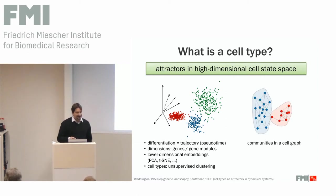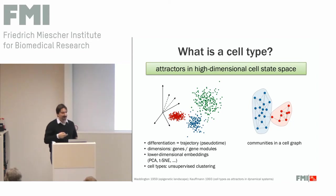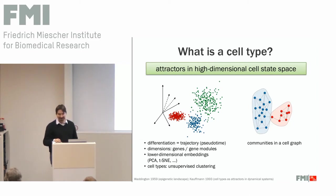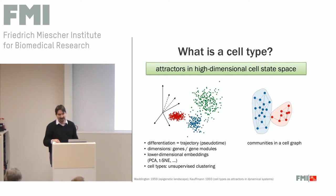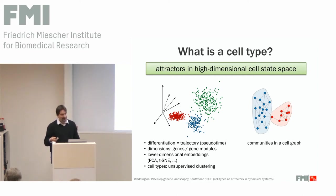One way to represent that in computers would be as a graph, where cells would be nodes and we would put edges between pairs of cells that we think are similar. These attractors could then be identified by finding cliques or densely connected communities in that graph. This has the advantage that there is an immense amount of existing work on different types of networks and graphs that we can leverage for this cell type definition problem.